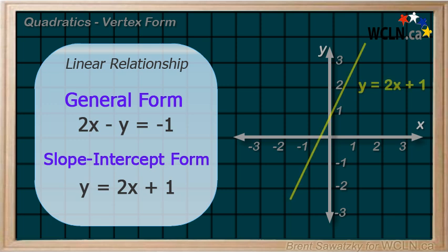Now it's easy to visualize as a line passing through the y-axis at y equals 1, and rising with a slope of 2 over 1, that is the rise over run, so 1 over, and 2 up.